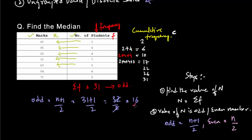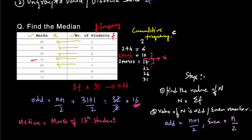If you remember, N was 31, so our median position was 16. Looking at the cumulative frequency column, 16 lies between 10 and 17 — closer to 17, which is the fourth value from the top. Therefore, we can conclude that the median is the marks of the 16th student, and that is 30. That's the median. In the next video, we will learn to find the median of grouped data.